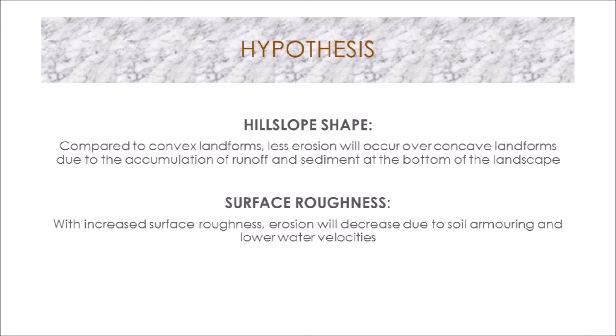Our first hypothesis was that concave hillslopes will have a decreased rate of erosion compared to convex hillslopes. Our second hypothesis, for surface roughness, was that with increased surface roughness there will be decreased rates of erosion due to lower water velocities and eventual soil armouring. Both hypotheses were tested in slightly differing experimental setups.